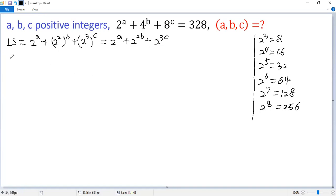So we can write the right side 328 as 256 plus 72.